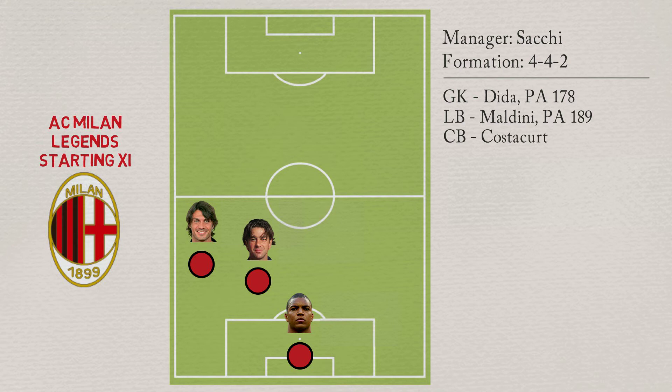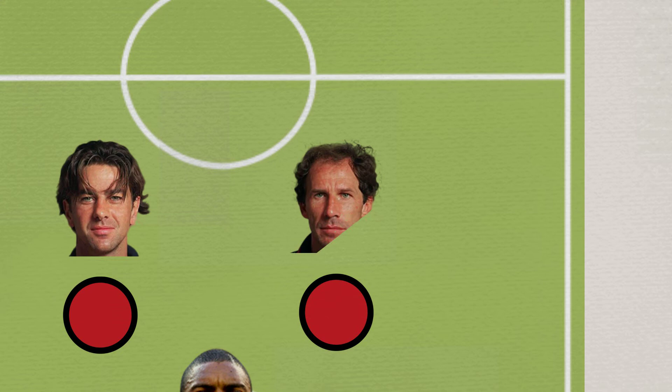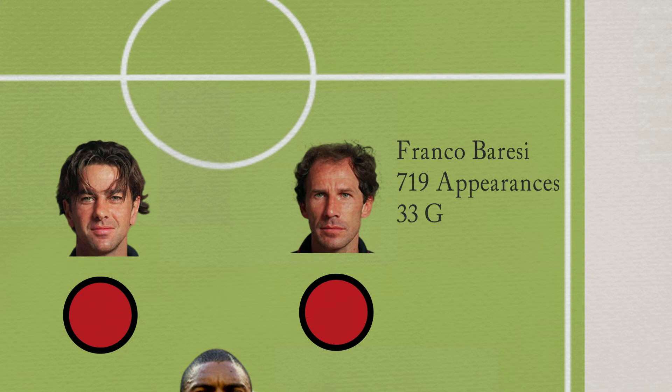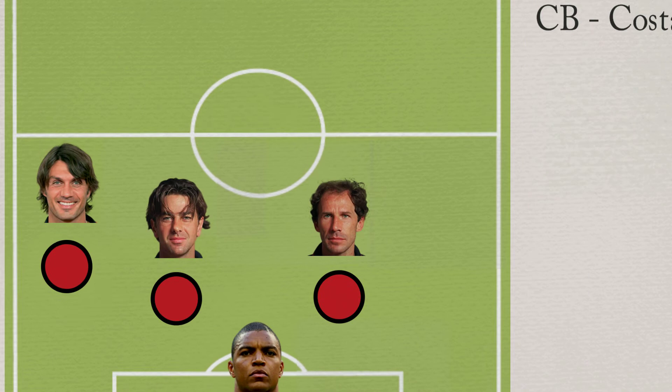The other central defender is Franco Baresi. With the Rossoneri he played 719 games and scored 33 goals, winning a total of 19 major trophies. Baresi has a potential ability of 188.